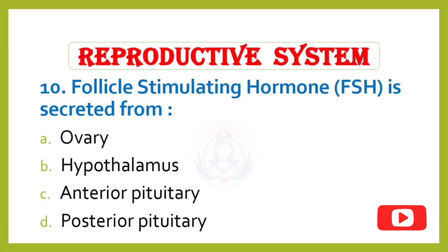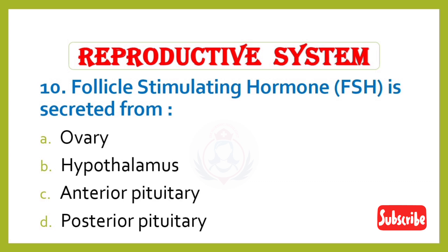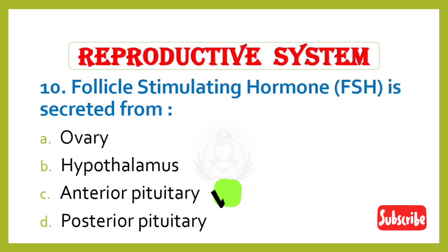Question 10. Follicle stimulating hormone (FSH) is secreted from: Option A – Ovary, Option B – Hypothalamus, Option C – Anterior pituitary, Option D – Posterior pituitary. Correct answer is Option C: Anterior pituitary.